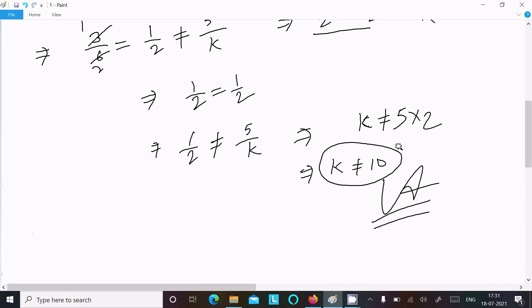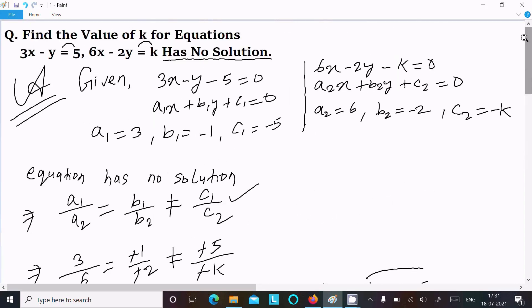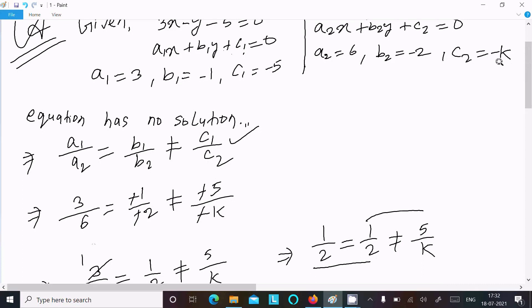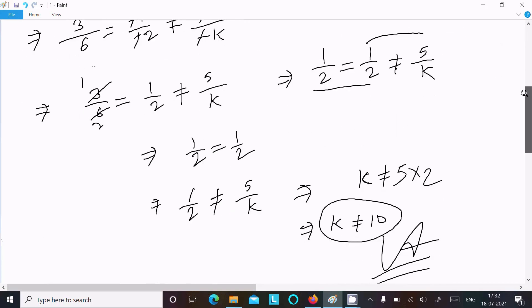To summarize: write the equations in the form a1x plus b1y plus c1 and a2x plus b2y plus c2. Identify a1, a2, b1, b2, c1, c2. For no solution, use a1/a2 equals b1/b2 not equal to c1/c2. We found 1/2 equals 1/2, and k not equal to 10.